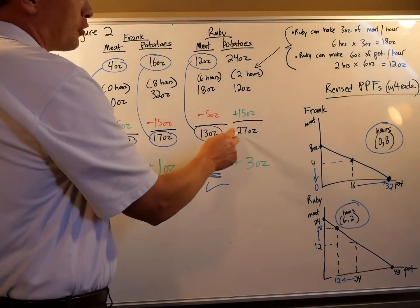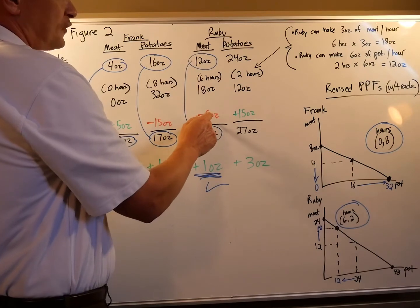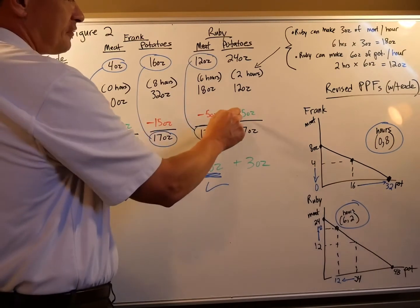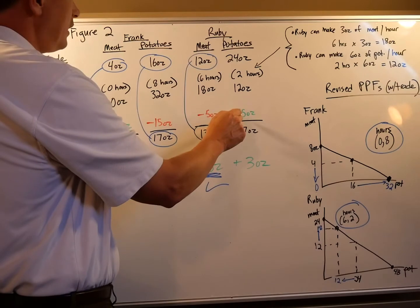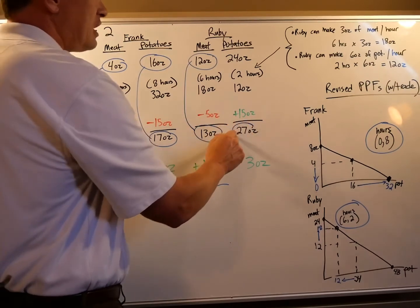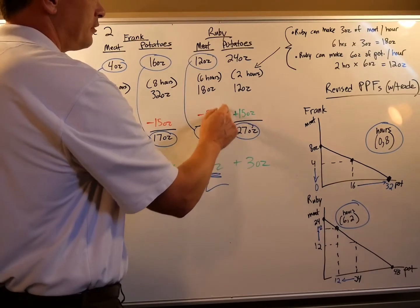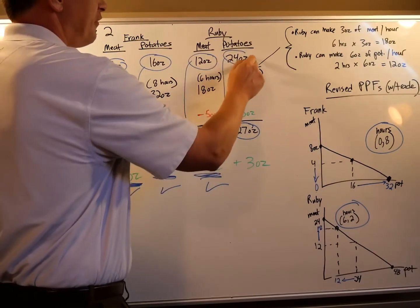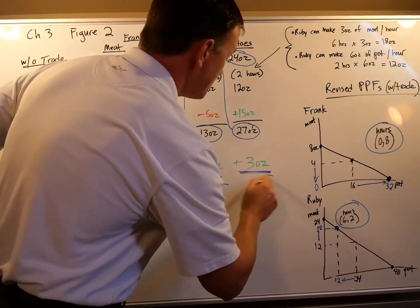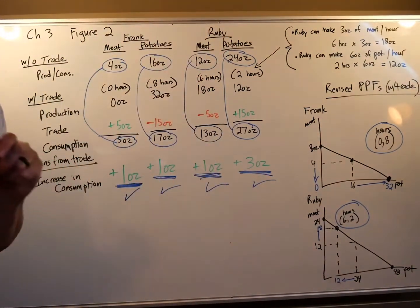What about Ruby? She sends Frank five ounces of meat but receives 15 ounces of potatoes from him. She produces 18 ounces of meat, sends five, and keeps 13 - compared to 12 before trade, she's better off by one ounce of meat. On potatoes, she ends up with 12 produced plus 15 received, totaling 27 ounces to consume, versus only 24 before trade - better off by three ounces.